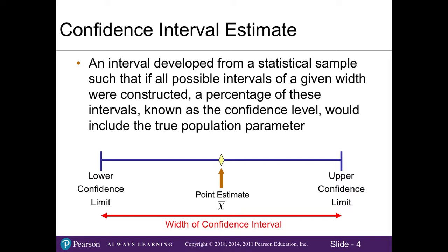Here we have our definition of a confidence interval estimate. It is an interval developed from a sample, such that if all possible intervals of a given width were constructed, a percentage of these intervals, known as the confidence level, would include the true population parameter. We can see in the very middle is our point estimate from our sample. My lower confidence limit is 35 minutes, and my upper confidence limit is 45 minutes. Note that the distance between my sample mean to each of my lower and upper limits are even.